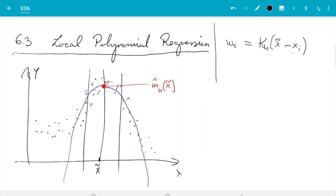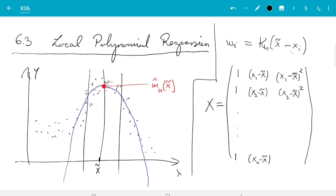Then we fit the polynomial estimate. So we use our design matrix as before. So we do 1, x_1 minus x twiddle, x_1 minus x twiddle squared. And here I do second order, but of course you can continue it to get polynomials of any degree you want. And then the next row is x_2 minus x twiddle, x_2 minus x twiddle squared, and so on. And the last row is x_n minus x twiddle, x_n minus x twiddle squared.